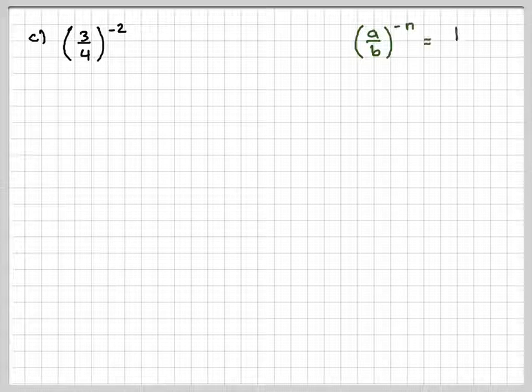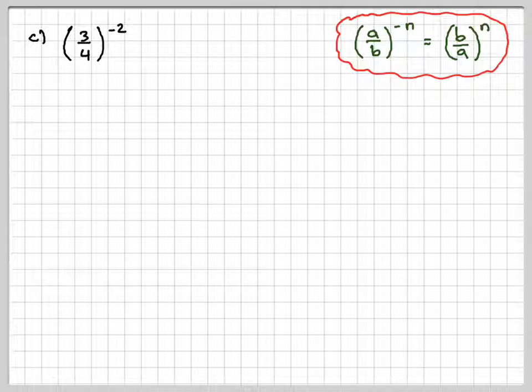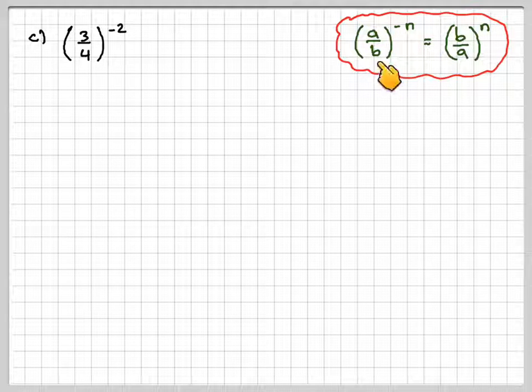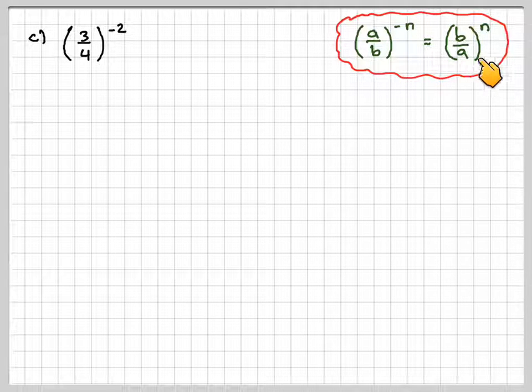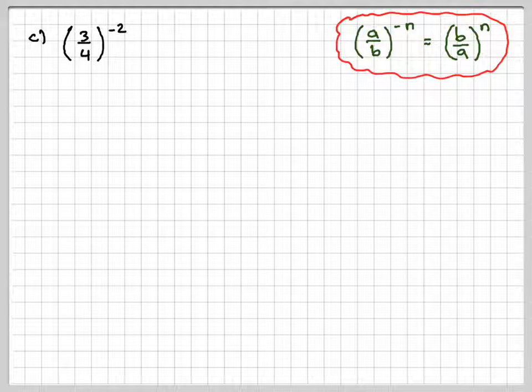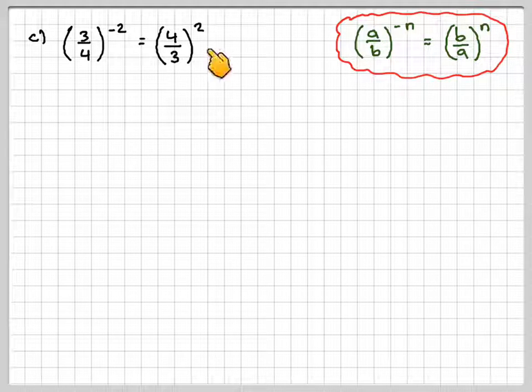Part c, 3 over 4 to the minus 2. So we've got a over b to the minus n is equal to. Now what you do here is you take the reciprocal of a over b, so you write it as b over a, and then make the power positive. So this becomes 4 over 3 to the power of 2.